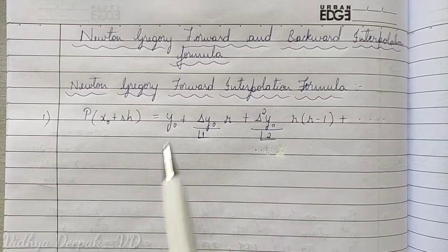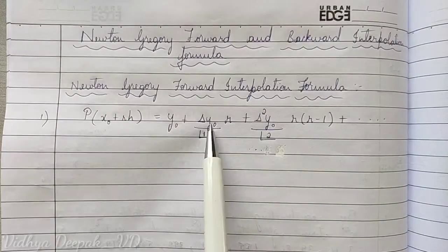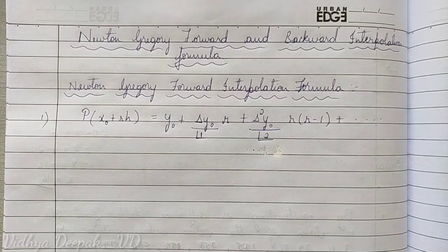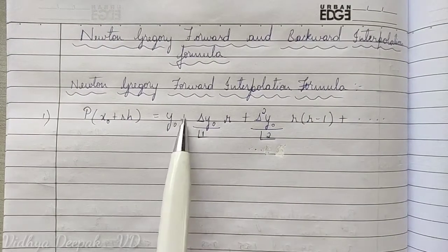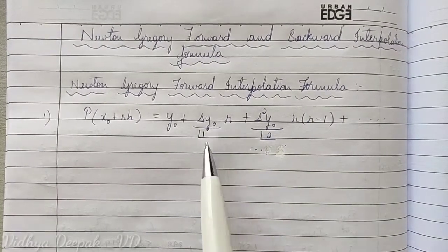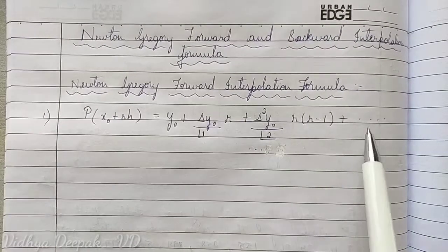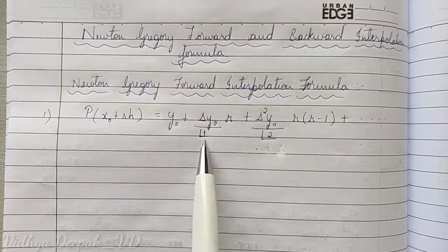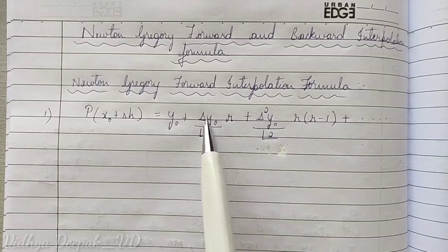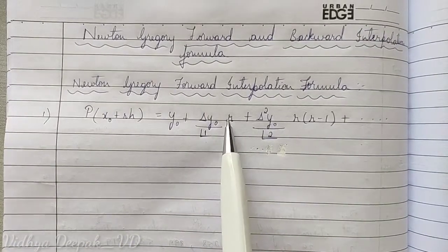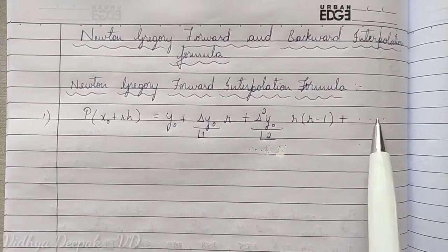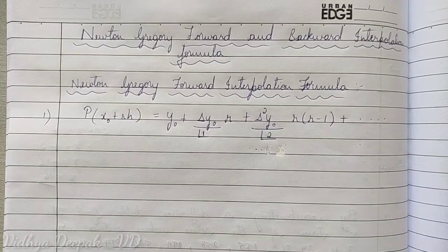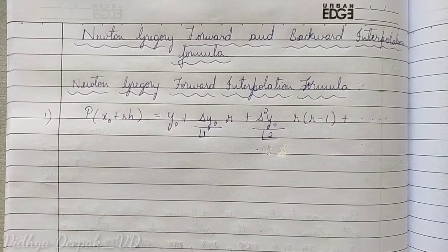How to remember this formula? It is very easy. The numerators go: y₀, Δy₀, Δ²y₀, Δ³y₀, Δ⁴y₀, Δ⁵y₀, and so on. The denominators start from the second term: 1!, 2!, 3!, 4!, and so on — the power of delta matches the factorial. For the r-terms: the first term is only y₀, then r, then r(r−1), then r(r−1)(r−2), then r(r−1)(r−2)(r−3), and so on.